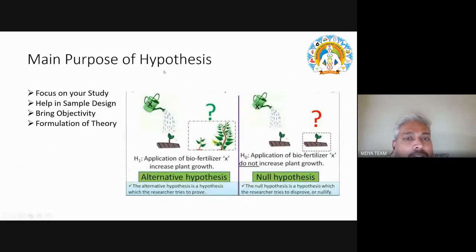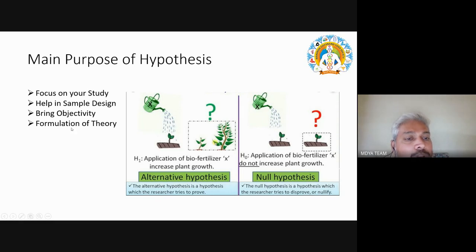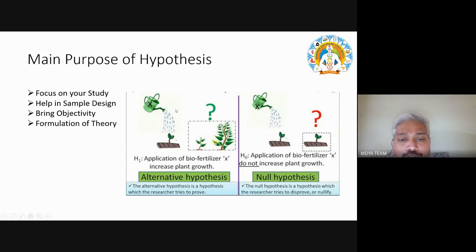The main purposes of a hypothesis are: to focus your study, to help in sampling design, to bring objectivity to your research, and to aid in the formulation of a theory. These are the purposes of the hypothesis. There are two kinds of hypotheses: null hypothesis and alternate hypothesis.